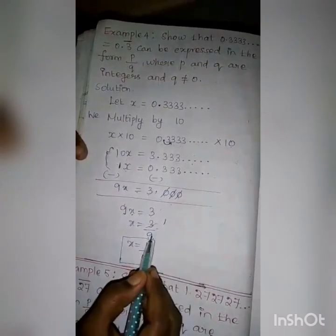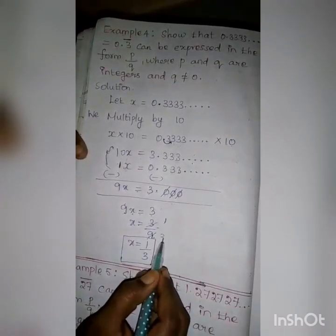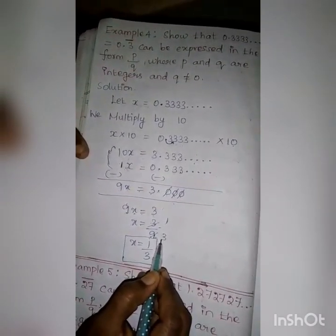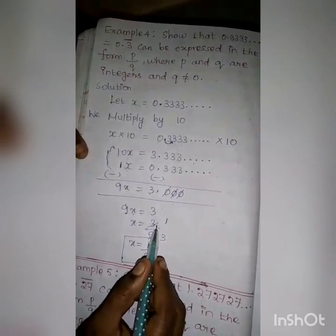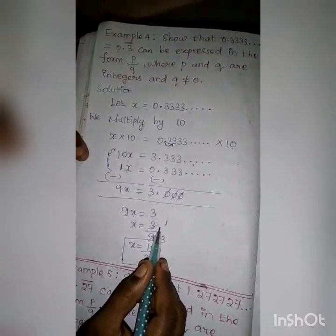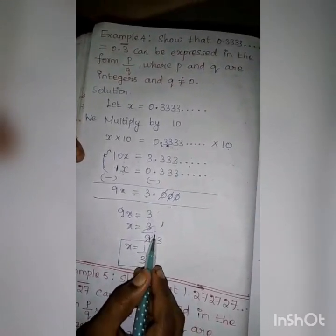3 divided by 3 is 1; 3 threes are 9. So they have a common factor other than 1, and we simplify.